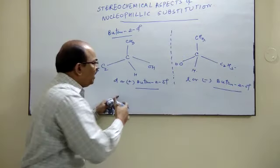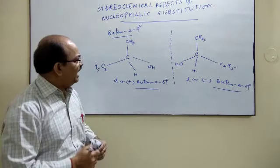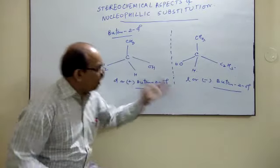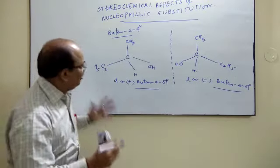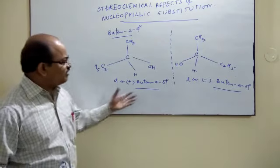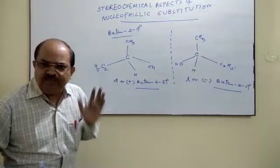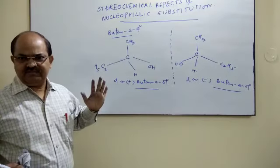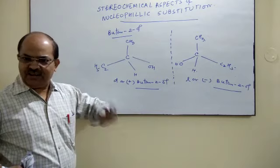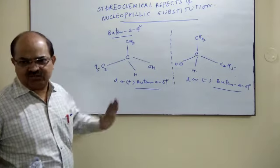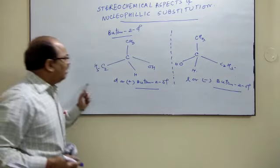Now the question is, one is D Butan-2-ol, another is L Butan-2-ol. Can we just observe by writing the structure? The answer is no. Whether the compound is dextrorotatory or levorotatory can only be determined by doing an experiment. No experiment, no confirmation whether the compound is dextro or levo.